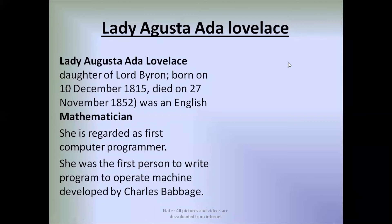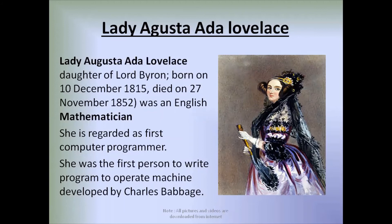Now let us talk about Ada Augusta Lovelace. She is the daughter of the famous poet Lord Byron. She was born on 10 December 1815 and died on 27 November 1852. She was an English mathematician, regarded as the first computer programmer because she was the first person to write a program to operate Charles Babbage's machine. Here is a picture of Ada Augusta Lovelace.